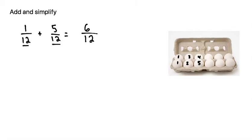5 eggs out of 12. So when we add those together, here we have 6 total eggs — or excuse me — 6 eggs out of a total of 12. So that's how we get the fraction, but then how can we simplify?